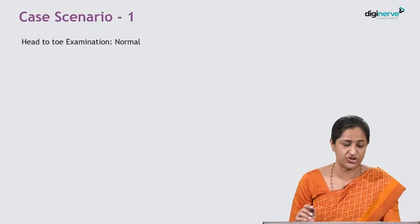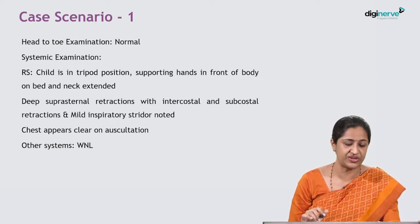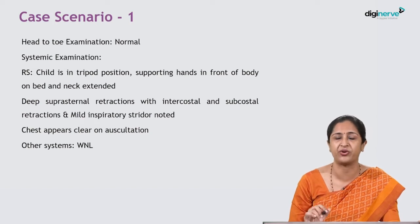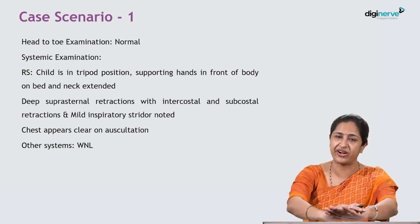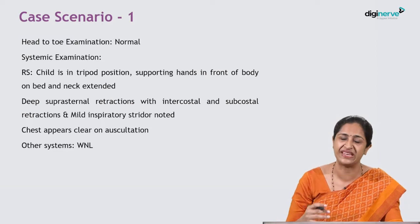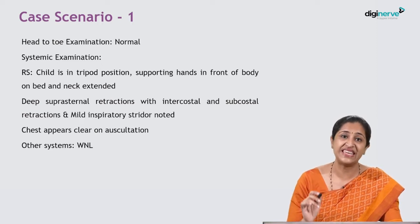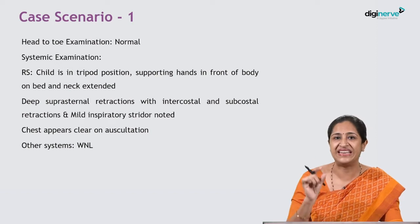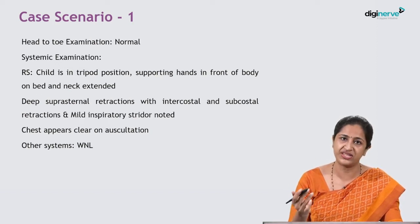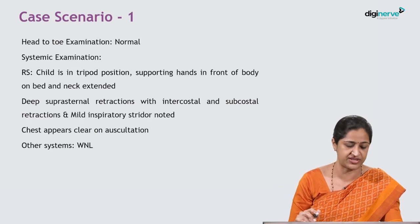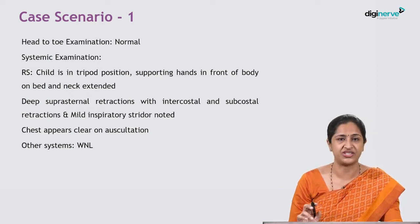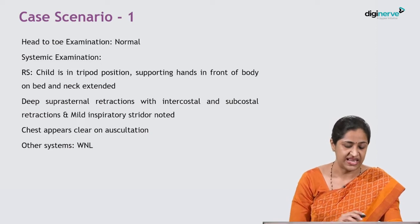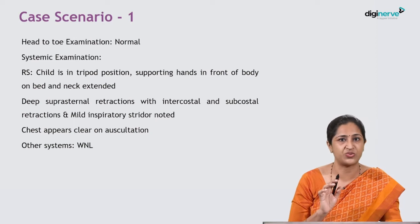On systemic examination, we found that the child is sitting in the tripod position — where the child is hunched forward with hands kept in front, neck hyperextended, struggling to breathe. He has deep suprasternal retractions, seen at the base of the neck, along with intercostal and subcostal retractions. There was mild inspiratory stridor noted, but the chest appeared clear on auscultation.